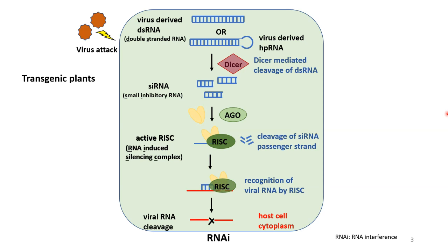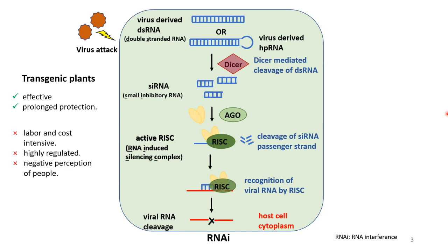To enhance this RNAi mechanism, transgenic plants are used wherein constructs that lead to synthesis of dsRNA are integrated into the plant genome, so that dsRNA is continuously generated and the plant is always primed for a virus attack. There are several advantages: it is effective and it provides prolonged protection against the virus. However, it has disadvantages: generating transgenic plants is labor and cost intensive, use of GMOs is highly regulated, and the most important disadvantage is the negative public perception of GMOs.